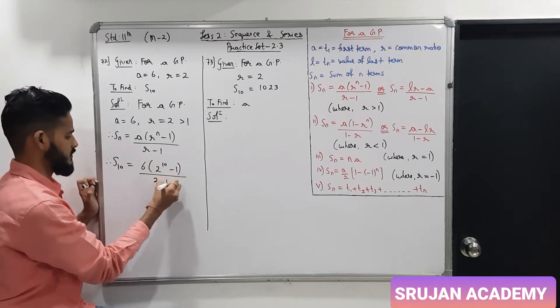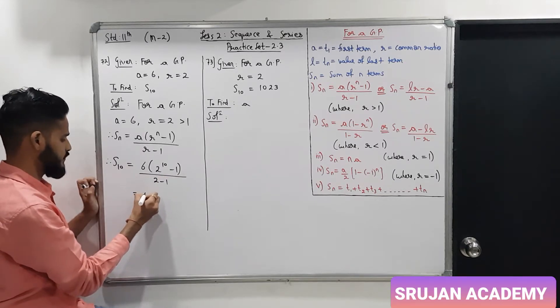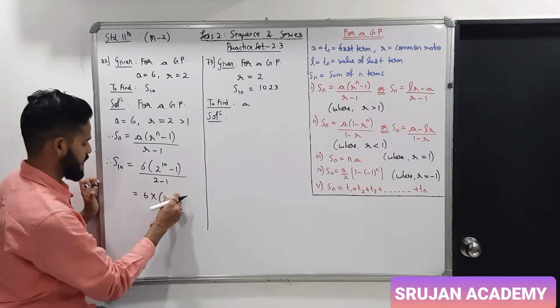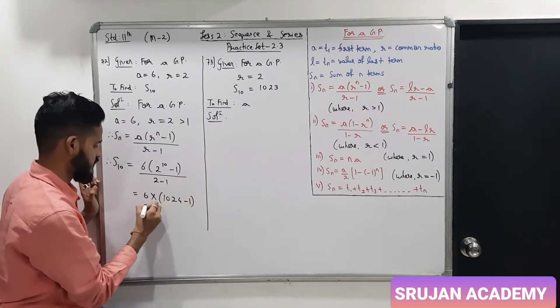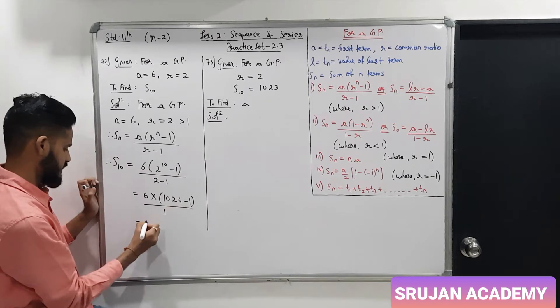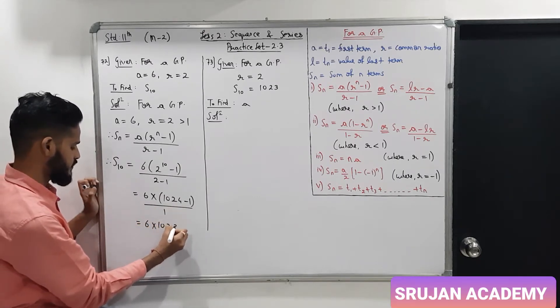So, this is 6 into 2 raise to 10 is 1024 minus 1, 2 minus 1 is 1. So, this is 6 into 1023.